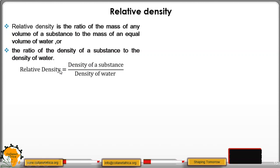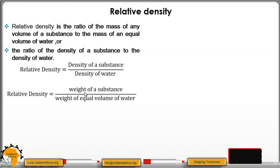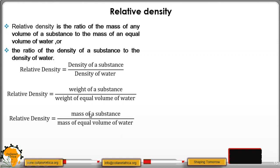Mathematically, relative density equals the density of a substance divided by the density of water, or the weight of a substance divided by the weight of equal volume of water, or the mass of a substance divided by the mass of equal volume of water.